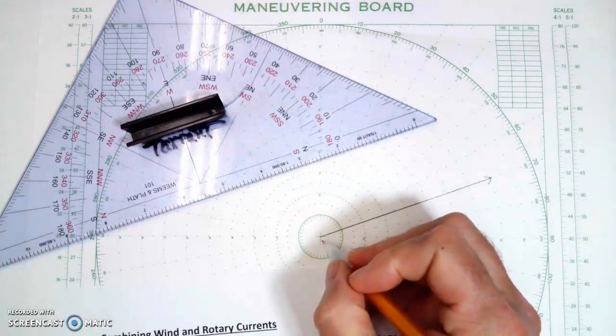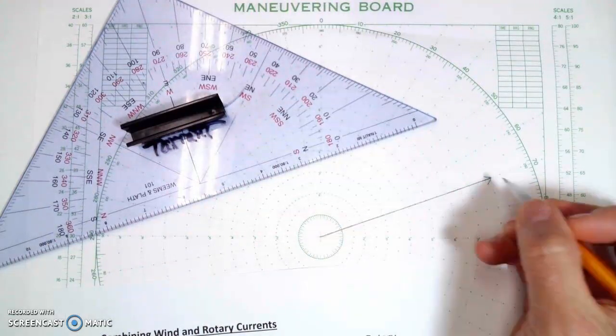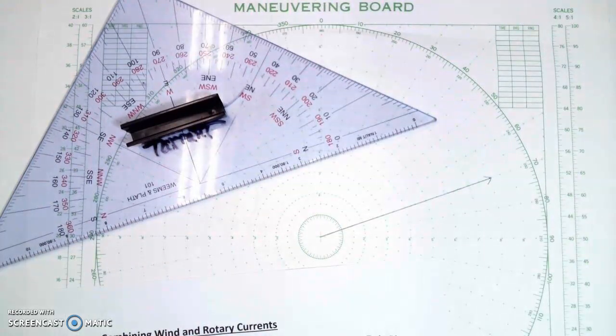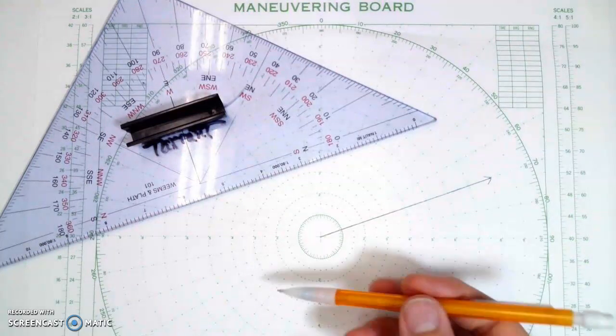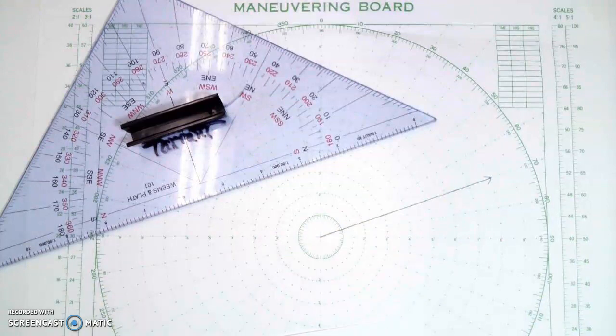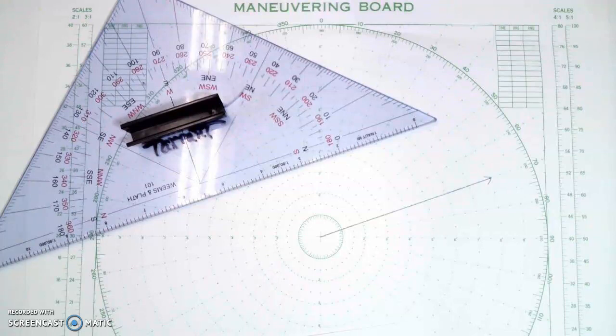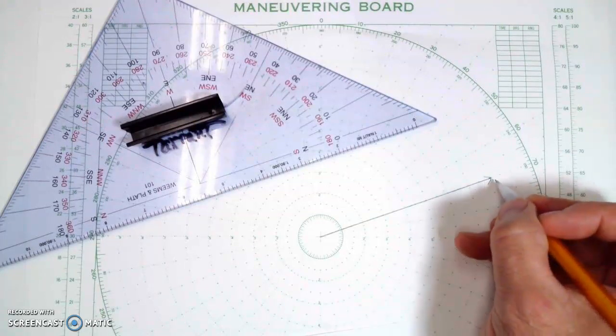Now the second current. So this is where it started, that's where it ends. So now my second current is 249. 249 is going to be this direction. It's almost opposite that. So it's going to be going 249 at 0.3. What I'm going to do is I'm going to draw that from the end of the first vector.